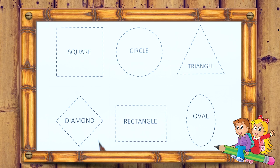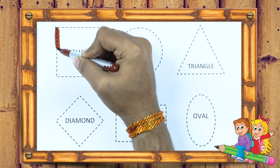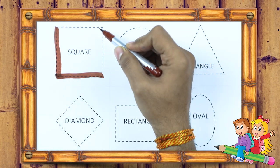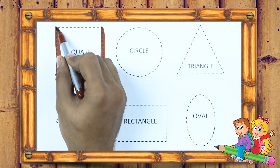It's a square. We draw square with brown color. Square.